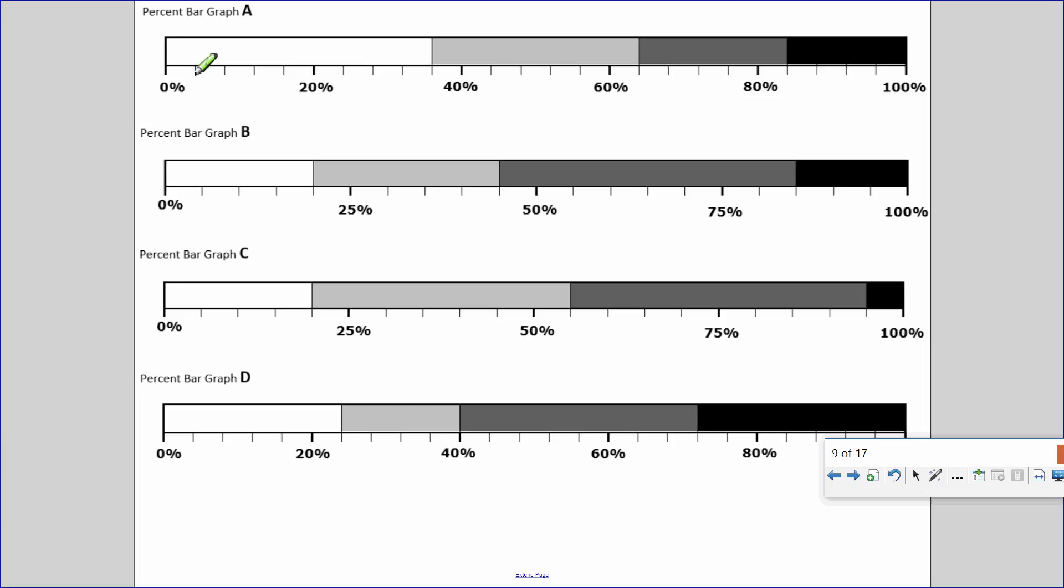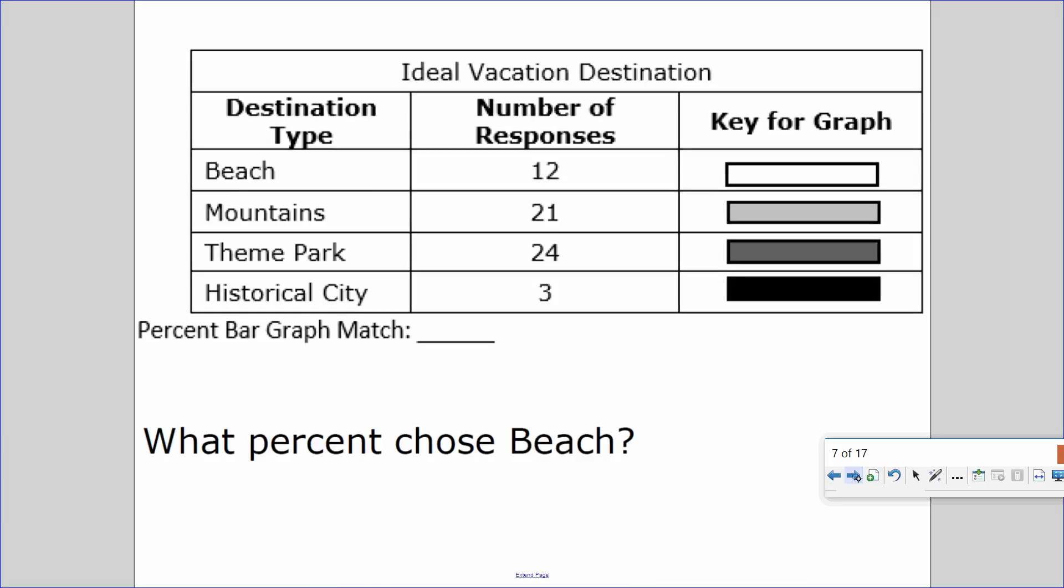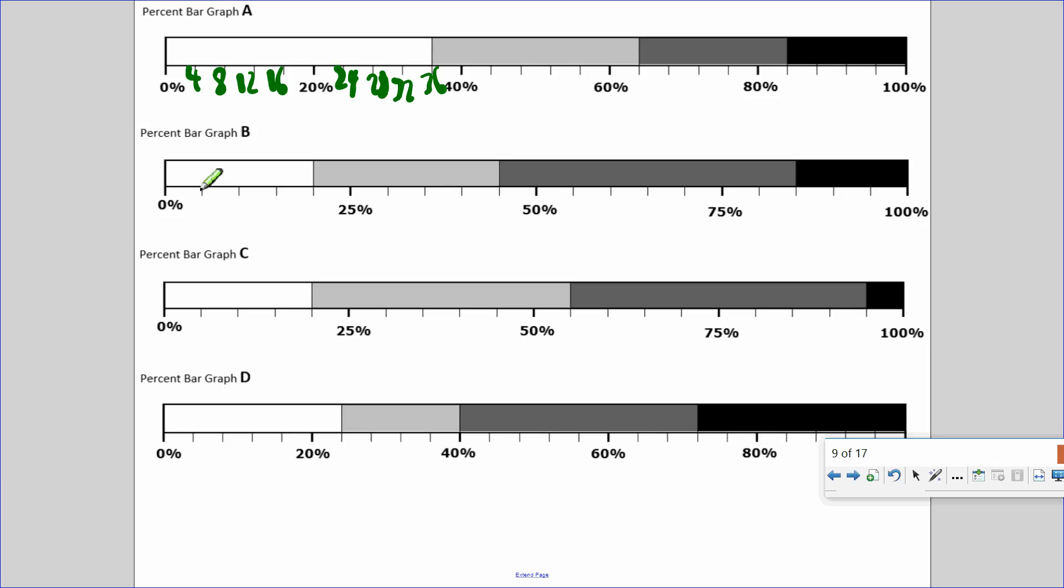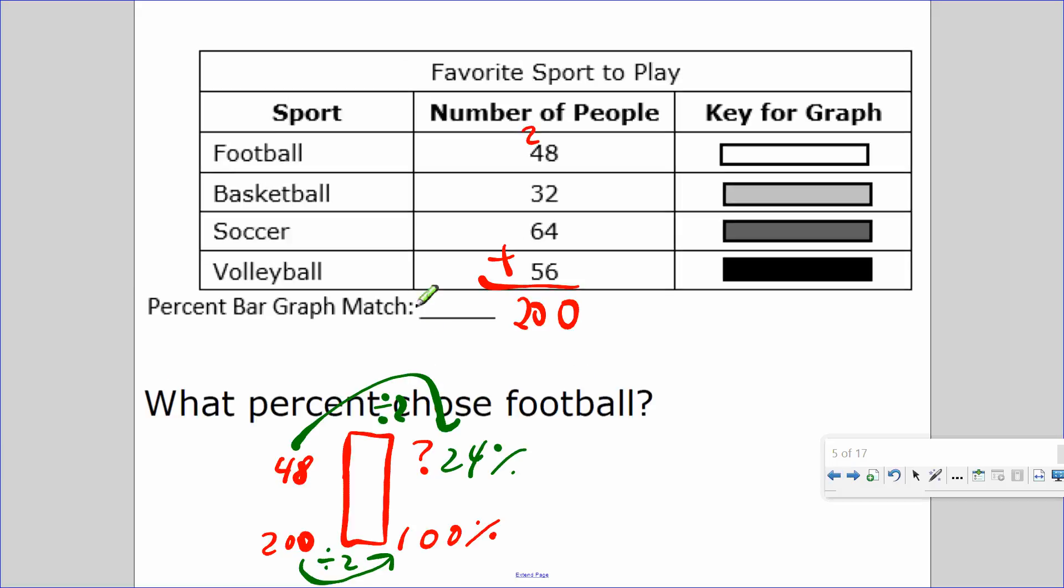So let's go through our survey and distinguish which one shows 24%. Let's look at this first one. I believe this is counting by fours. According to this, 24% chose football, and it's the white bar. Counting through the options, it is D. So D matches.